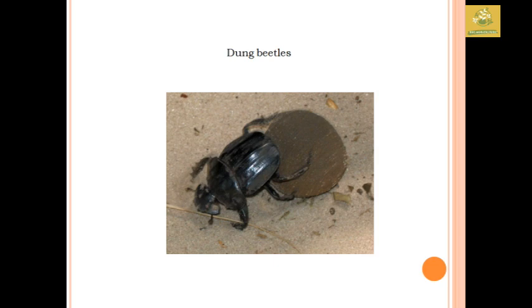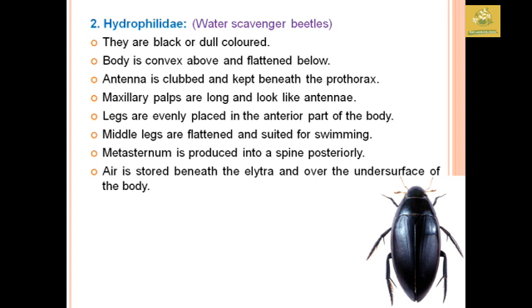The Hydrophilidae family comprises water scavenger beetles. They are dull or black colored, with a convex body flattened below. Antennae are clubbed and kept beneath the prothorax. Maxillary palps are long and antenna-like. Legs are evenly placed in the anterior part of the body, with middle legs flattened and suitable for swimming. The metasternum is produced as a spine posteriorly, and air is stored beneath the elytra and over the underside of the body.